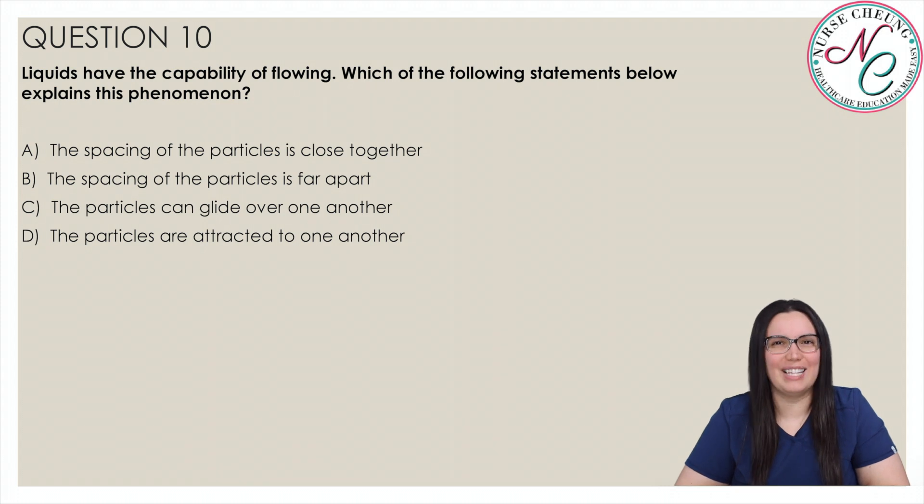Moving on to our last question, question 10. Liquids have the capability of flowing. Which of the following statements below explains this phenomenon? Is it A, the spacing of particles is close together? B, the spacing of particles is far apart? C, the particles can glide over one another? Or D, the particles are attracted to one another? And the correct answer is C, the particles can glide over one another.